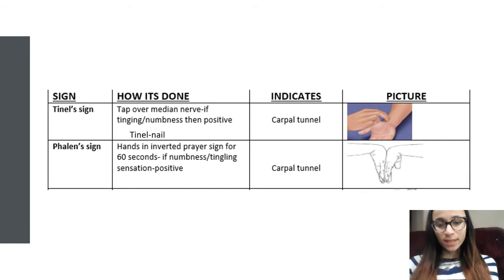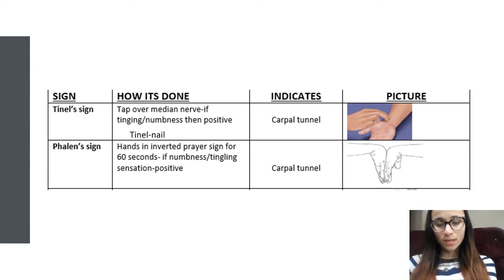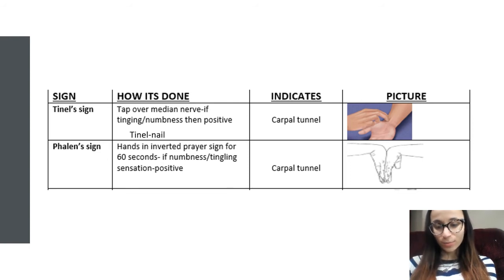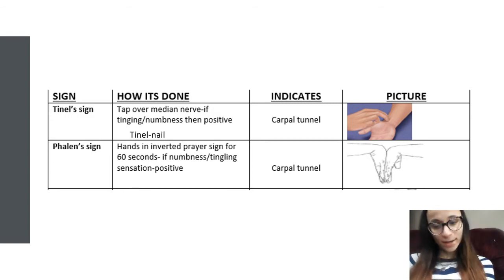Next one is Tinel sign. You're going to be tapping over the median nerve — if you look in the picture, you can see where that is — and they're going to have tingling and numbness. If they do, it's positive for carpal tunnel syndrome. The way I like to remember this is 'Tinel tap' — T-T, tap Tinel. The next one is Phalen sign. You put your hands in prayer position and turn it upside down — inverted prayer position — hold it for a minute. If they have numbness and tingling, it's positive for carpal tunnel syndrome. That's easy to remember: P for prayer, opposite of prayer.